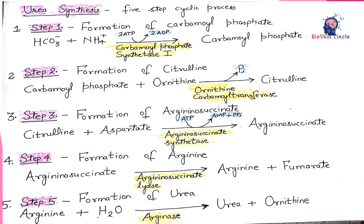Citrulline then moves into the cytoplasm. The third step is the formation of argininosuccinate: citrulline reacts with aspartate to form argininosuccinate in an ATP-dependent reaction. The enzyme that catalyzes this reaction is argininosuccinate synthetase. An important point is that aspartate provides the second nitrogen atom that is ultimately incorporated into urea.